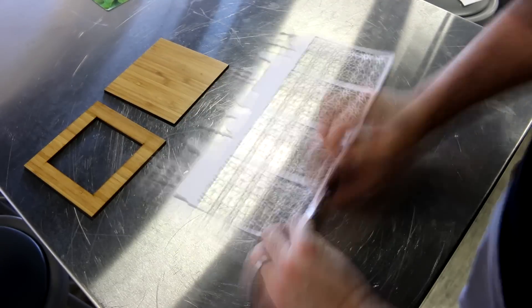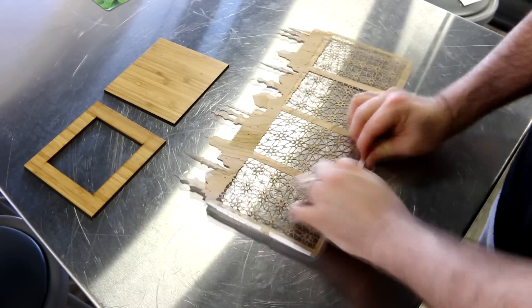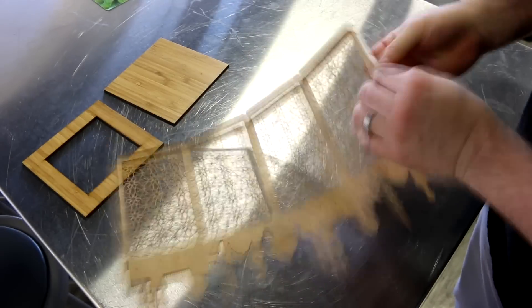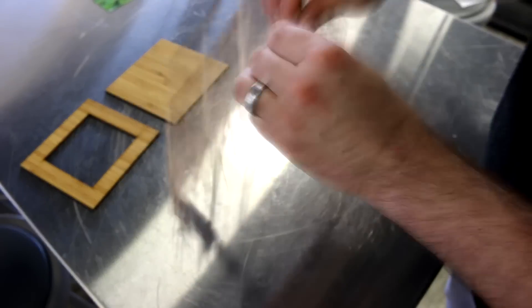Next using our score lines we folded our lantern and with a strip of adhesive glued it together. We then stuck our lantern to the base and secured it with the bottom.